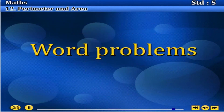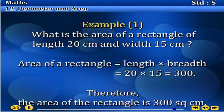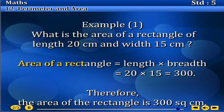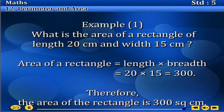Now see an example in words. Word problems. Example 1: What is the area of a rectangle of length 20 cm and width 15 cm? Area of a rectangle equals length into breadth, equals 20 into 15, equals 300. Therefore, the area of the rectangle is 300 square cm.